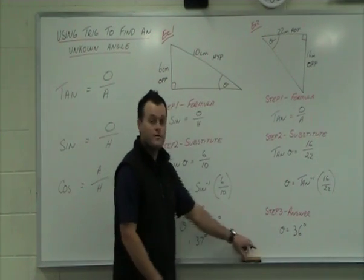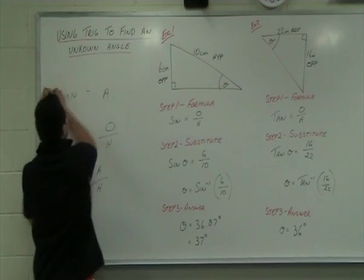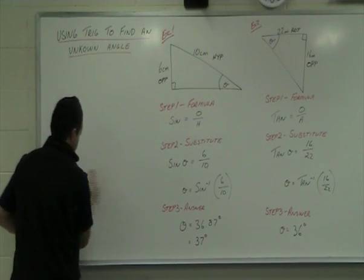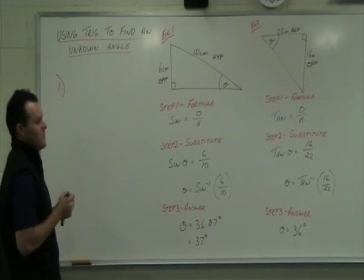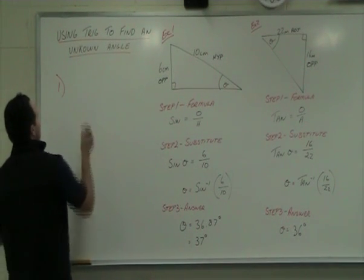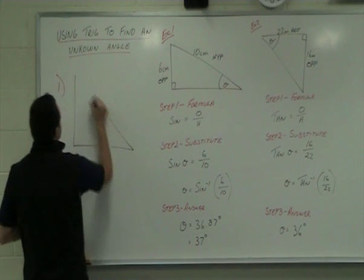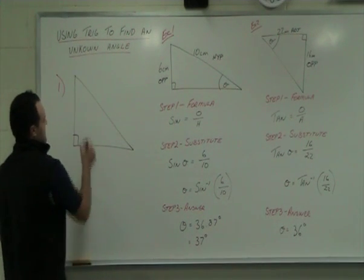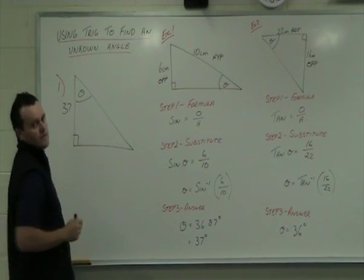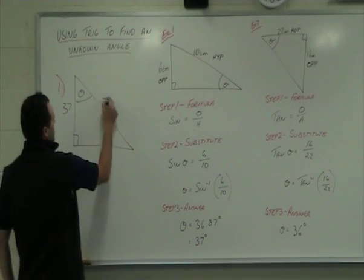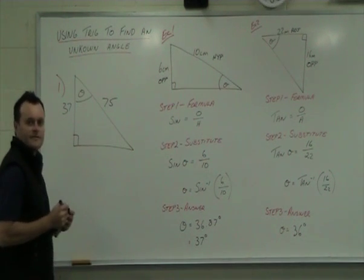Here's a couple of practice questions for you that I'll get you to have a go at. Practice number one is a right angle triangle. Angle at the top, a side of 37 and a side of 35.